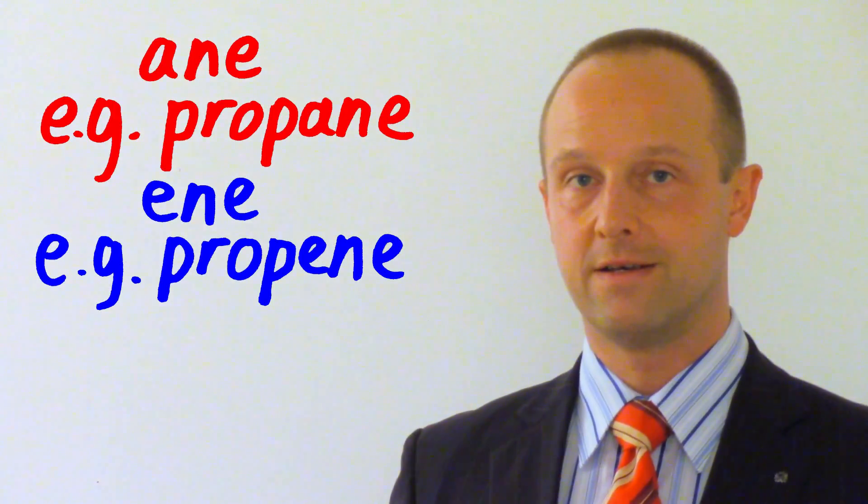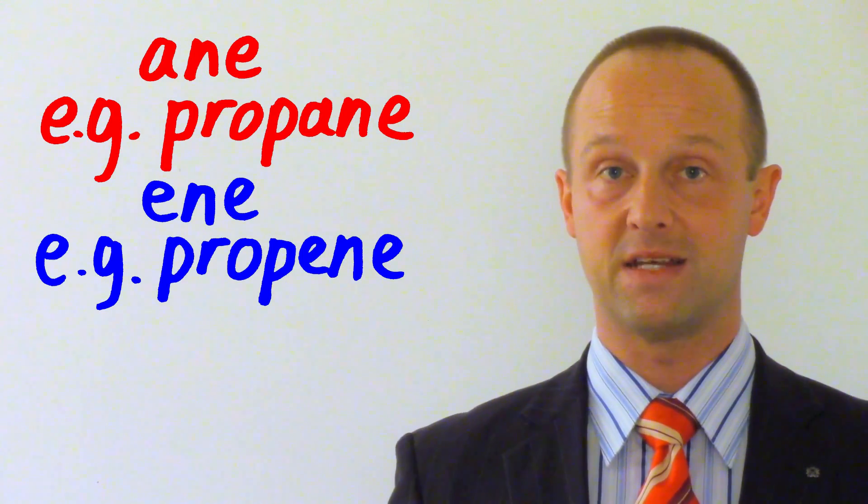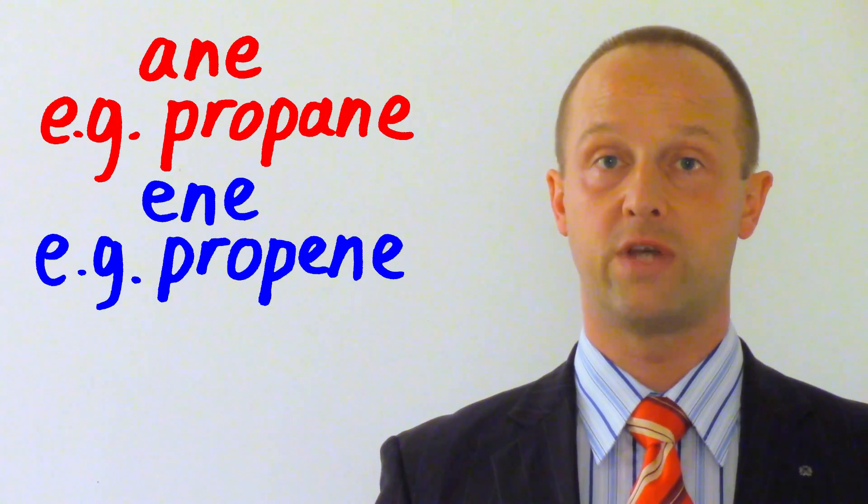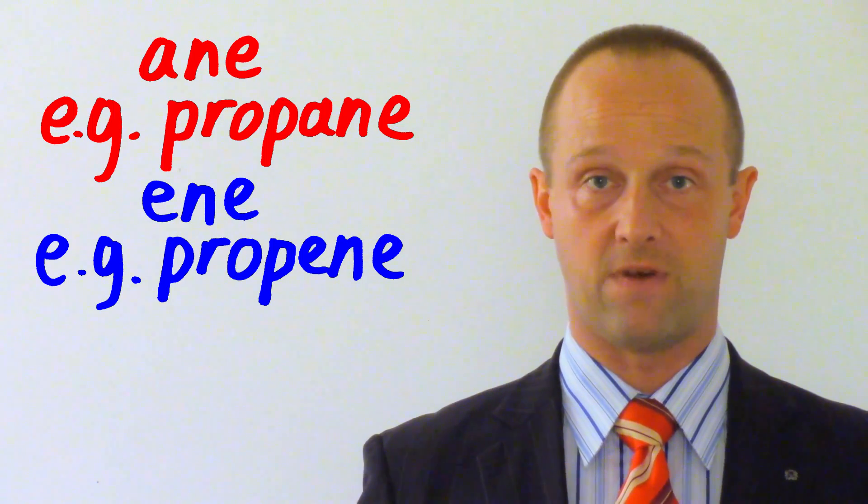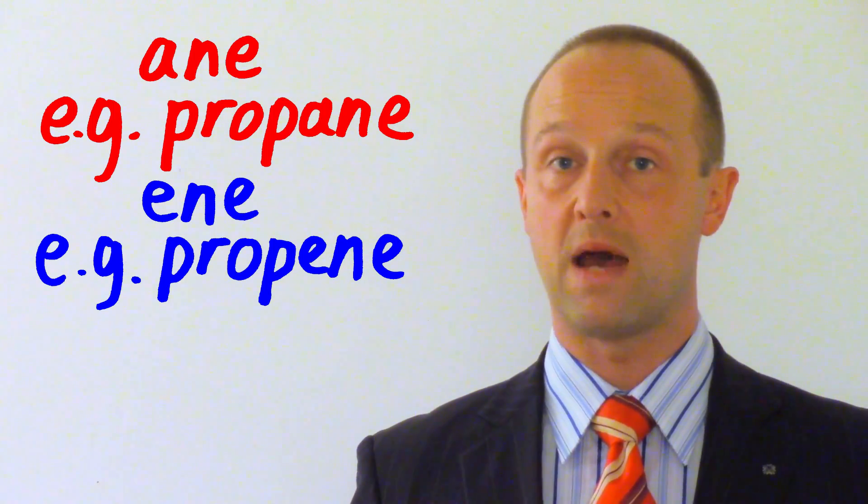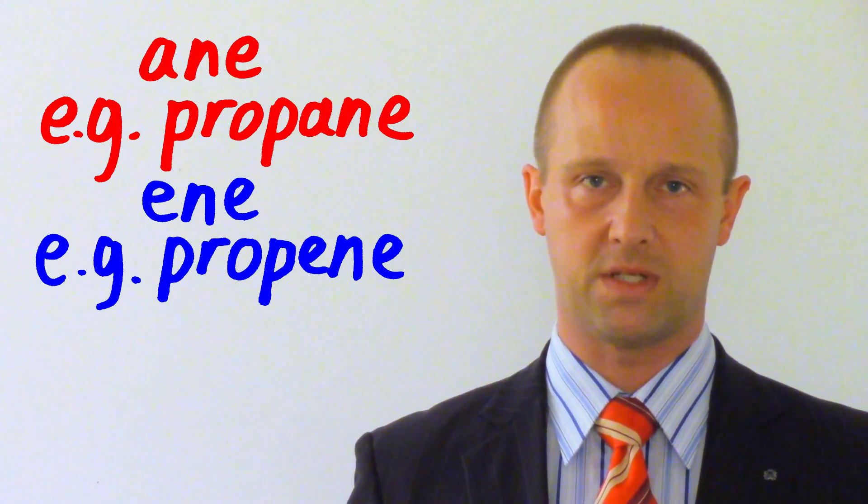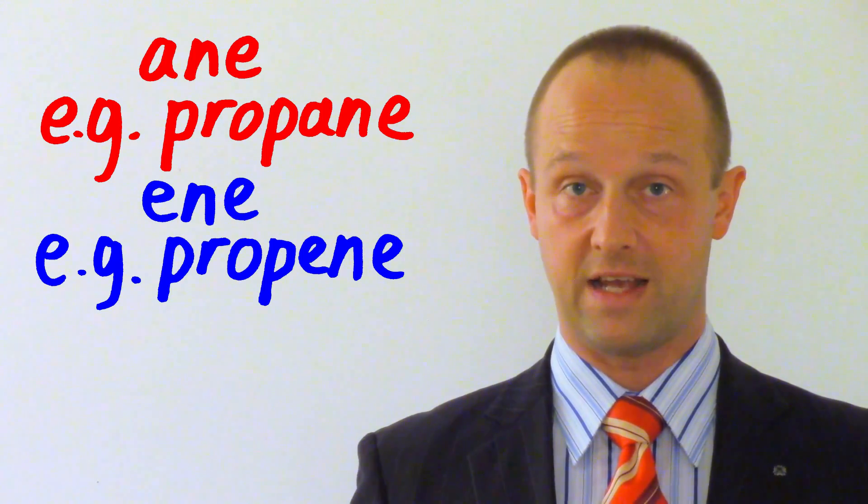The second part of the name tells you whether it's an alkane or an alkene. This is really simple. Alkanes all end in -ane. Alkenes all end in -ene. This can be a little bit subtle when you're reading a piece of text on an exam paper. Make sure that you know whether you're looking at an alkane or an alkene from the name, because propane and propene are different compounds.